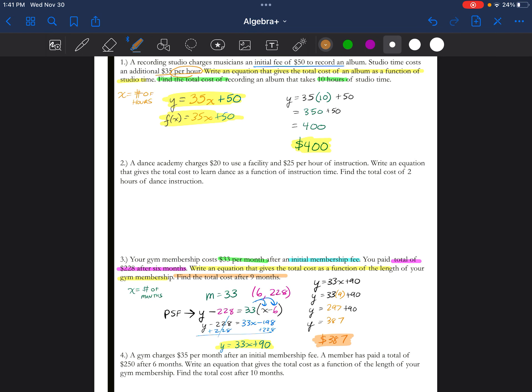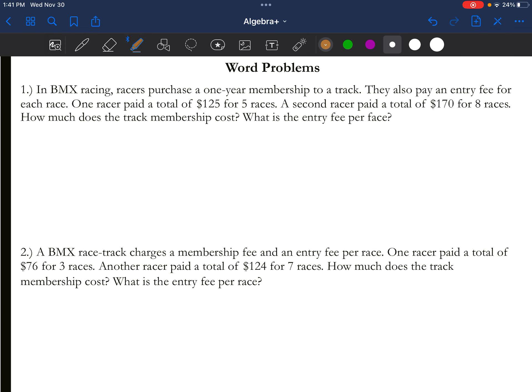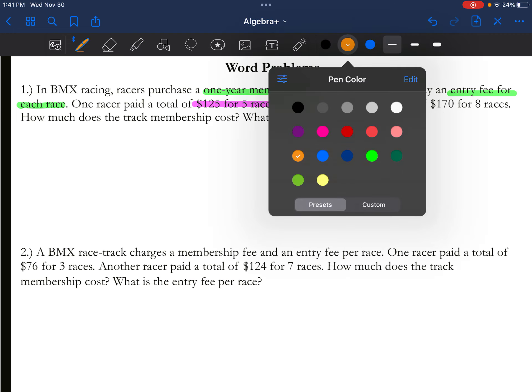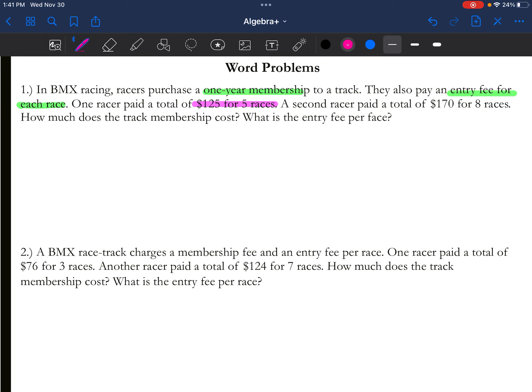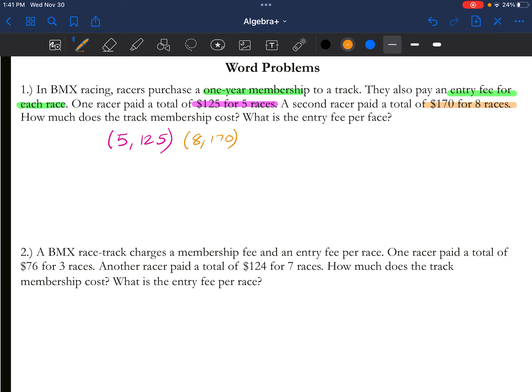These two types of problems are probably the most simplest. Now there's one last type of problem, but again, we're just building on what we just did. So on page 45, number one, it says in BMX racing, racers purchase a one-year membership to the track. Okay, that's like the y-intercept, but they also pay an entry fee for each race. Each race, that's kind of like your slope. It says one racer paid a total of $125 for five races. Well, we just recently learned that when there's money for an amount of something, you can write that as a coordinate point. So I have (5, 125). Make sure you flip it, because the total cost, that 125, is your y.